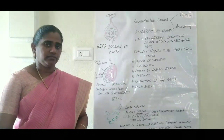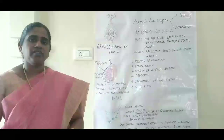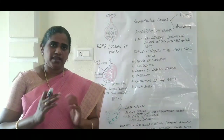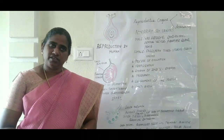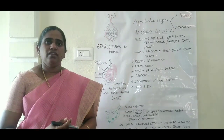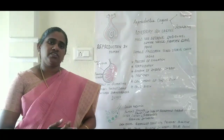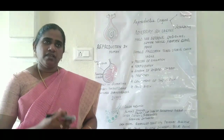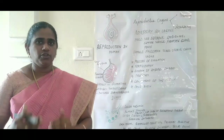Now let's study the next topic: sexual reproduction in humans. We learned about how the reproduction process takes place in plants — in the first session we studied the two types of reproduction found in plants, that is vegetative reproduction and asexual reproduction. In the second session we studied sexual reproduction in plants. Now let's study how sexual reproduction takes place in human beings.